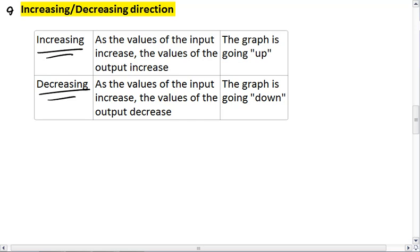For a decreasing direction, that means that as the values of the input increase, the values of the output are decreasing. So the graph is going down.